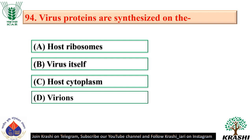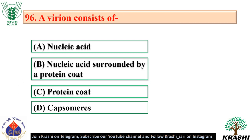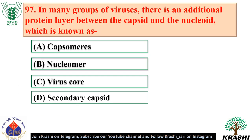Question number 94: Virus proteins are synthesized on the host ribosomes — option A. Question number 95: The nucleic acid of a virion is called nucleoid — option D. Question number 96: A virion consists of nucleic acid surrounded by a protein coat — option B. Question number 97: In many groups of viruses, there is an additional protein layer between the capsid and the nucleoid, which is known as virus core — option C.